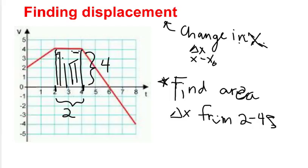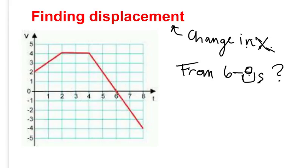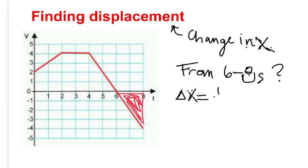If I wanted the displacement instead from six to eight seconds, I need to find this area. Here's the trick though: because this is underneath the t-axis, it's negative, so I'm going to get a negative number. I have a triangle, so delta x is going to be one-half base times height. The base is from six to eight, so that's two. The height is from zero to negative four, so actually a negative height, and I get a displacement of negative four meters. That means Spongebob walked backwards four meters between six and eight seconds.